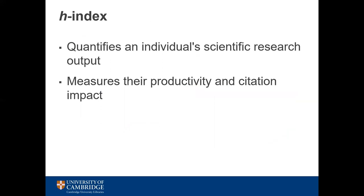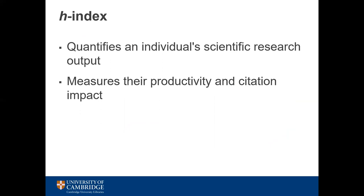Another commonly used metric is the H-Index. The H-Index quantifies an individual's scientific research output, measuring the productivity of the researcher and the citation impact of their publications. The H-Index can be found on citation databases and in Google Scholar profiles, for example.